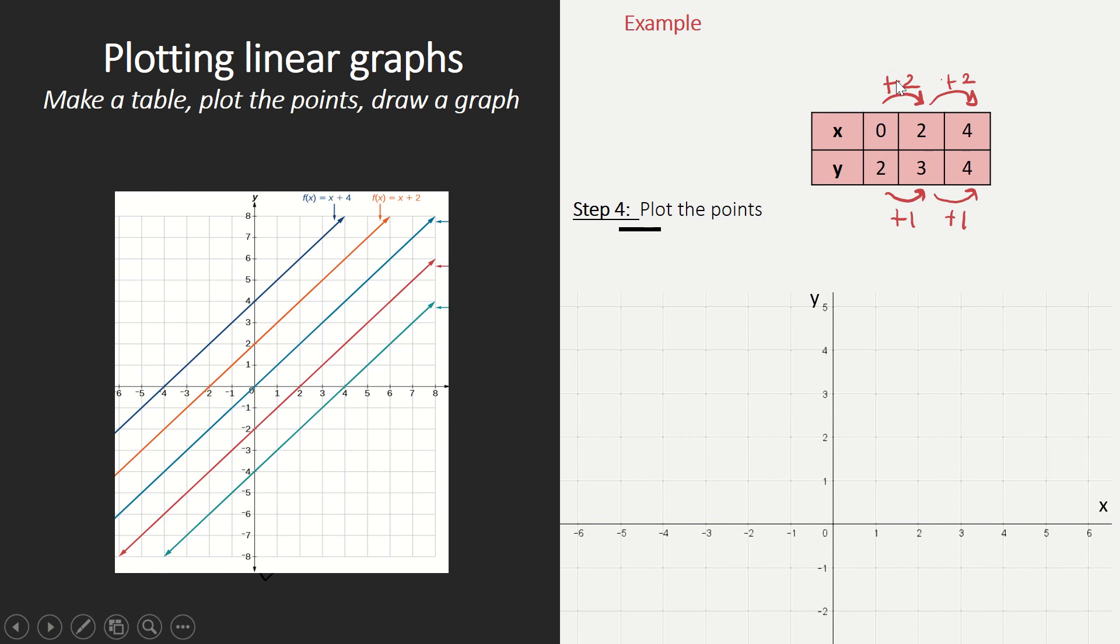As you can see here, each time we add two, and then underneath each time we add one. So that means that we have a linear graph.